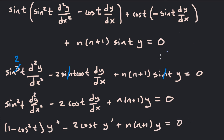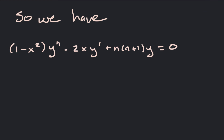And now this is it — we just have to remember what x was. x was equal to cosine t; that's where we started. So this is exactly 1 minus x squared y double prime minus 2x y prime plus n times n plus 1 y equals 0. Finally we have the Legendre equation: 1 minus x squared y double prime minus 2xy prime plus n times n plus 1 y equals 0. Now I just need to know what the value of n is to solve it all. That's how you do it.